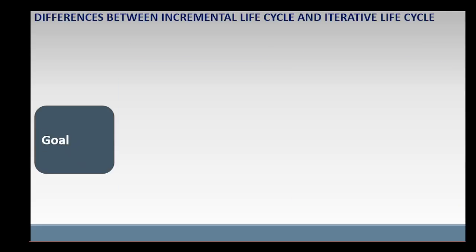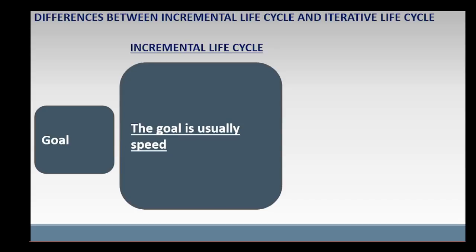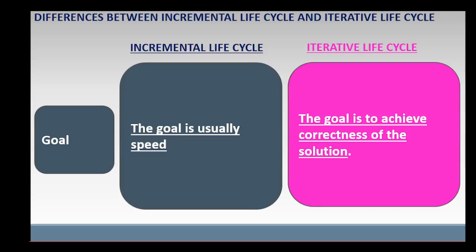In terms of goal, in incremental project life cycle, the goal is usually speed. There is a need to quickly deliver the product to the customer, or the customer desires to start using the product as quickly as possible. In iterative project life cycle, the goal is to achieve correctness of the solution. There is a need to review the product in each cycle and use customer feedback to improve or refine product versions or prototypes until the desired or final product version is achieved.